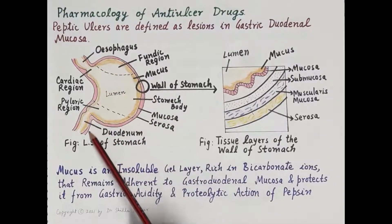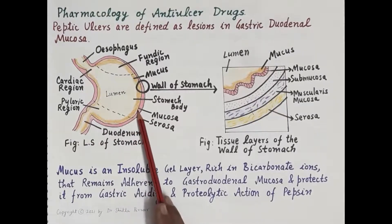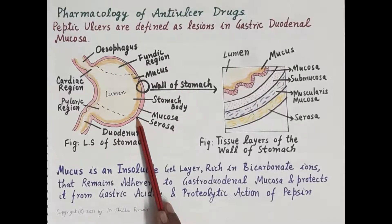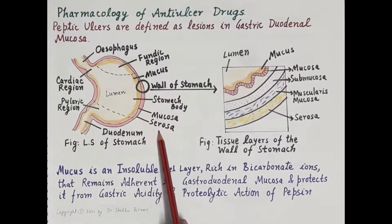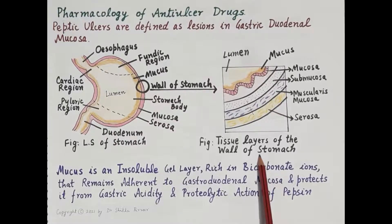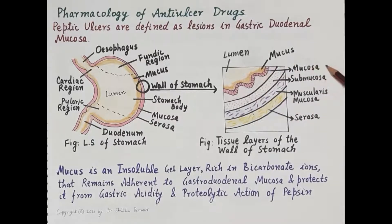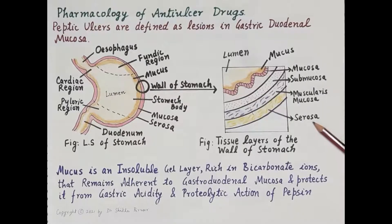The wall of the stomach is shown here in pink. The innermost lining of the wall of the stomach is called the mucosa. Below the mucosa is the submucosa and muscularis mucosa, and the outermost protective layer of the stomach is called the serosa. The tissue layers of the wall of the stomach are very clearly shown in this diagram.